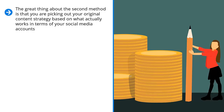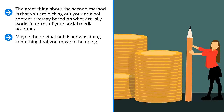You have to understand that even though high-quality third-party content may have a lot of objective social signals, those signals may have been generated in different contexts. Maybe the original publisher was doing something that you may not be doing. Still, you can definitely do the first method if you're in a hurry. But if you have some time to spare, you might want to try the second method — do curation first, let it run, and then pay attention to your statistics.